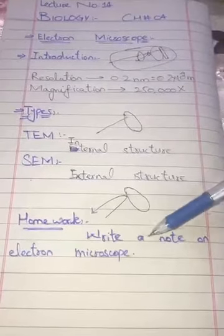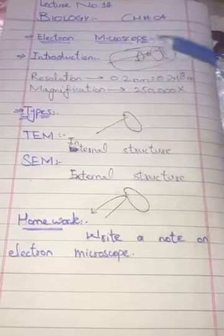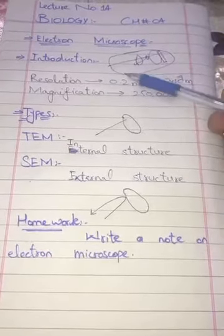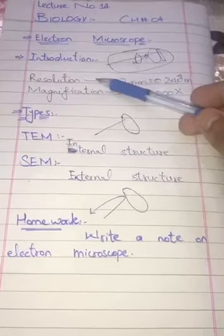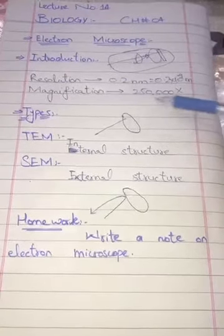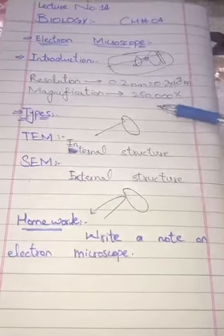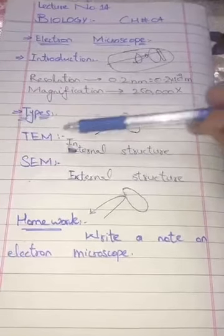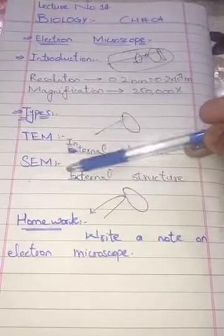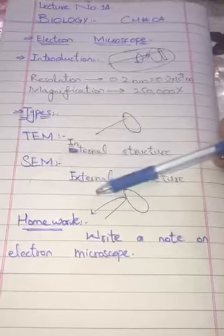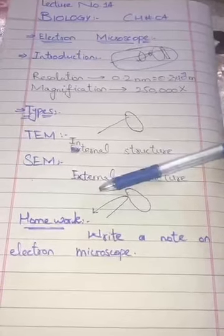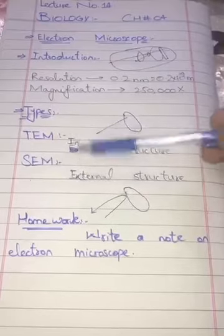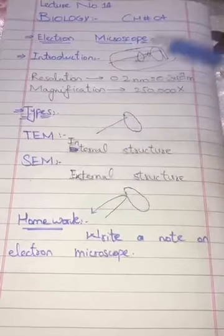Today's topic is the electron microscope, and this is a long question we have to remember. We have different headings: first the introduction, then how much magnification is achieved, and how many types there are — there are two types, TEM and SEM. This is also an important short question: differentiate between TEM and SEM.